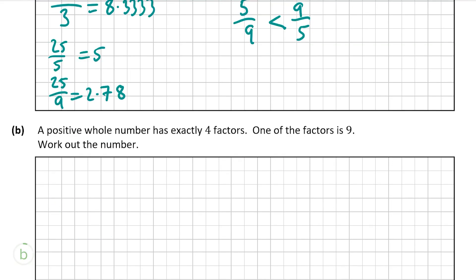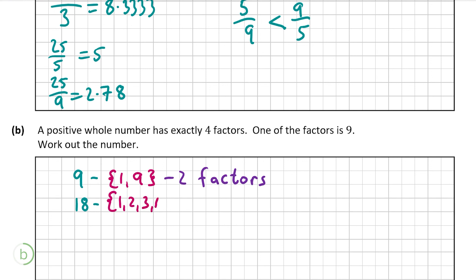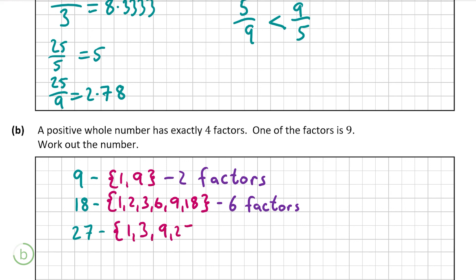Part b tells us that a positive whole number has exactly four factors and one of them is 9, and we have to find the number. Since one factor is 9, the number must be a multiple of 9. The first multiple, 9 itself, has only two factors — so that's out. The next, 18, has six factors: 1, 2, 3, 6, 9, and 18 — too many. The next multiple is 27, with factors 1, 3, 9, and 27 — exactly four factors.